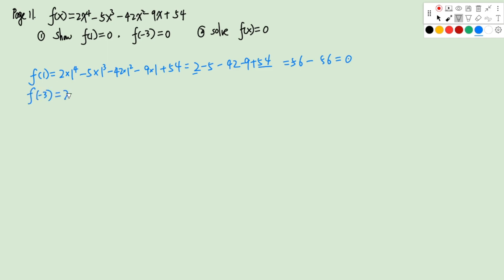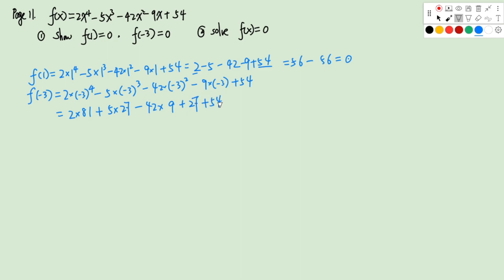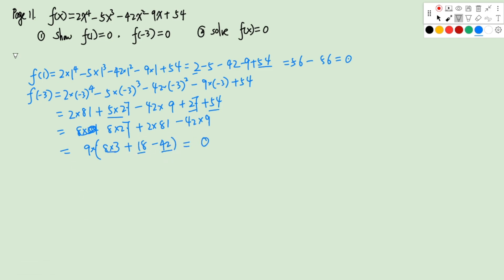For f(-3): we compute 2(-3)⁴ - 5(-3)³ - 42(-3)² - 9(-3) + 54 = 2(81) + 5(27) - 42(9) + 27 + 54. Factoring out 9 from the main terms: 9(24 + 18 - 42) = 9(0) = 0. So f(-3) = 0 is confirmed.